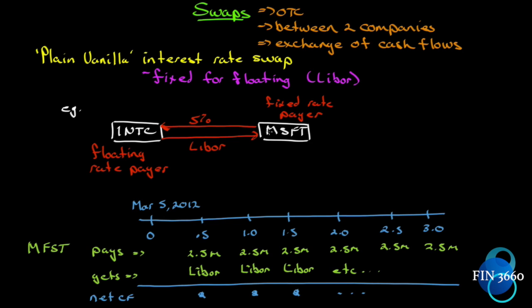In this example, Microsoft is going to pay Intel five percent, and in exchange Intel is going to pay Microsoft a floating rate. Microsoft looks like it wants to pay a fixed rate and probably externally owes a floating rate — so it wants to receive that floating rate to cancel it out and pay the five percent. Intel, receiving five percent and paying LIBOR, looks like it externally has a fixed rate. We say Intel is the floating rate payer and Microsoft is the fixed rate payer.